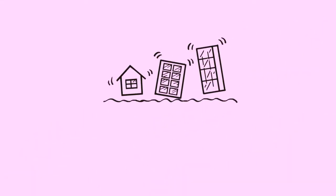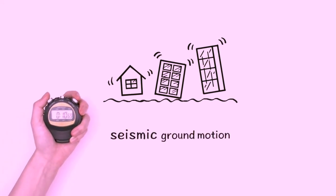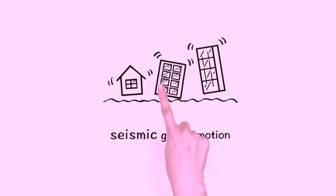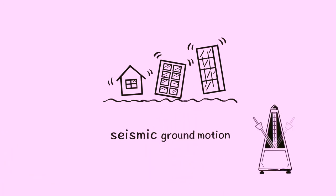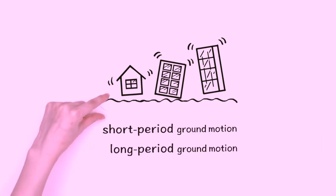The shaking movement due to an earthquake is called seismic ground motion. The number of seconds for each back-and-forth movement is its period. Depending on the length of the period, the movement is either short or long period ground motion.